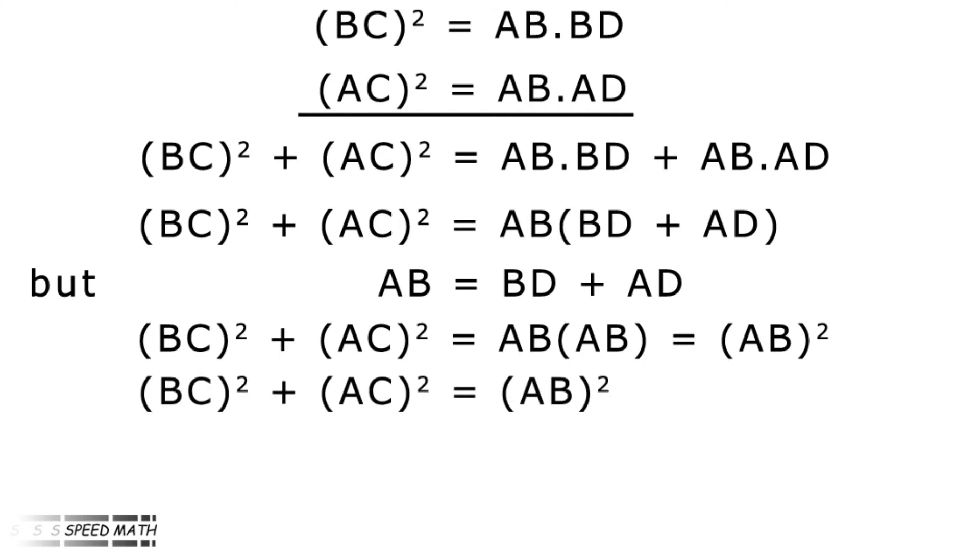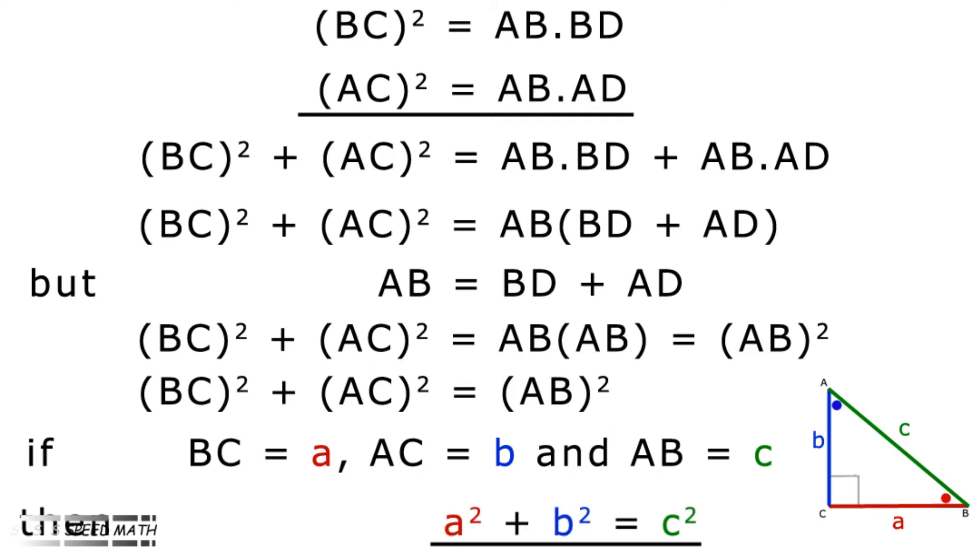Now we have BC squared plus AC squared equals AB squared. Simplifying the geometry by making side BC as little a, AC as little b, and AB as little c, we have a squared plus b squared equals c squared. Voila. Pythagoras theorem, QED.